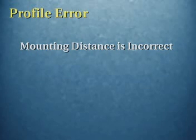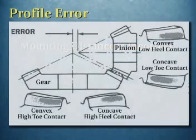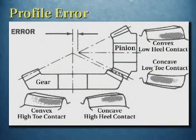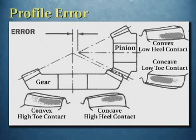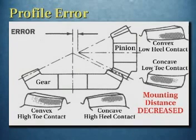Profile error occurs when the mounting distance is incorrect. This is the most common type of error and is the easiest to correct. First, we see the condition where the gear has high toe contact on the convex side and high heel contact on the concave side. Also, the pinion has low heel contact on the convex side and low toe contact on the concave side.